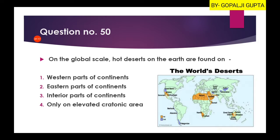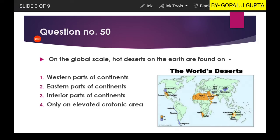Next question: 'On the global scale, hot deserts on the earth are found on?' In this picture, the color is showing hot deserts while the blue color is showing cold deserts. As you can see, most hot deserts are lying on the western side of the continent, so option one is our right answer.